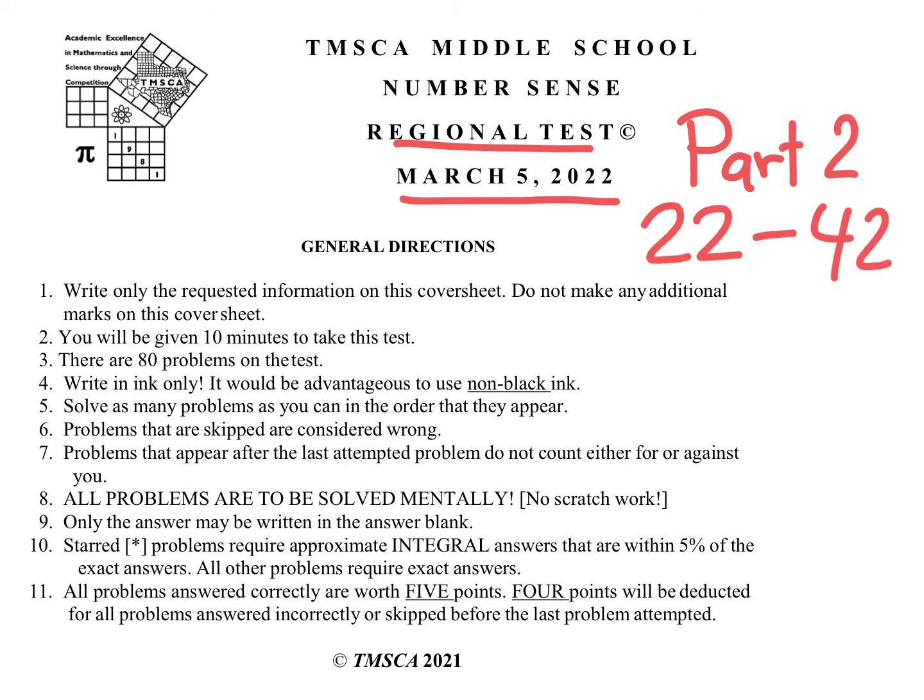Second column, first column was Part 1. So in this test, all problems are to be solved mentally, and we have integral answers for the approximations, star problems. I'll be working these step-by-step in detail, and I will write some on the margin. You are not allowed to write on the margin. You're only allowed to write the exact answer in the answer blank.